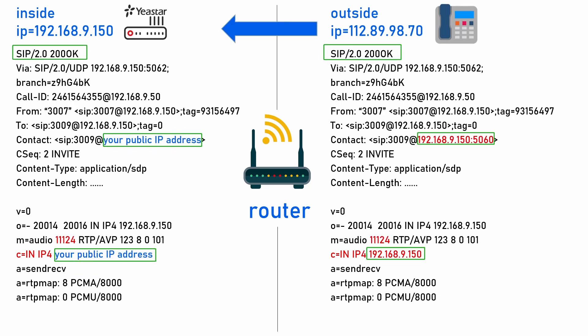For outgoing calls, the PBX will change the IP address in the Contact header and SDP in the INVITE SIP request. For incoming calls, the PBX will change the IP address in the Contact header and SDP in the 200 OK SIP response.